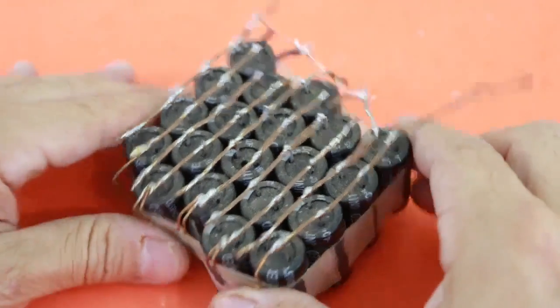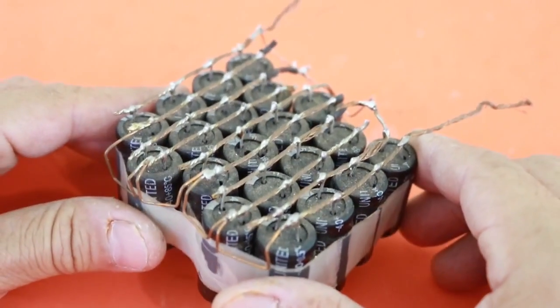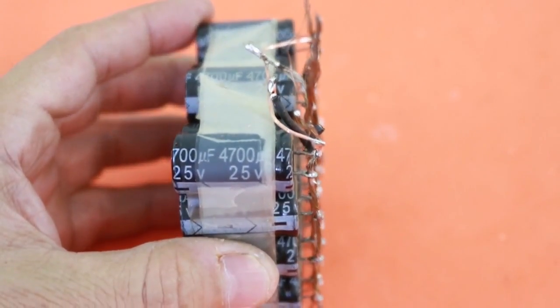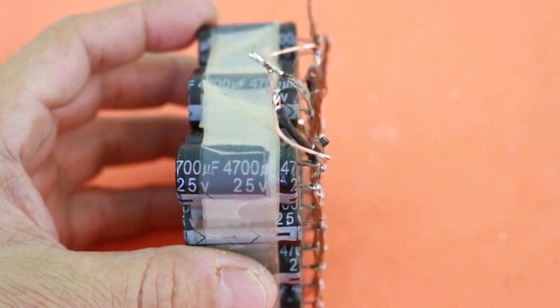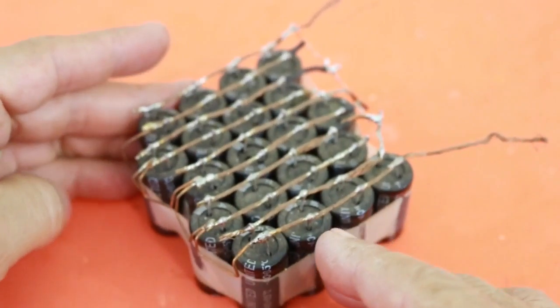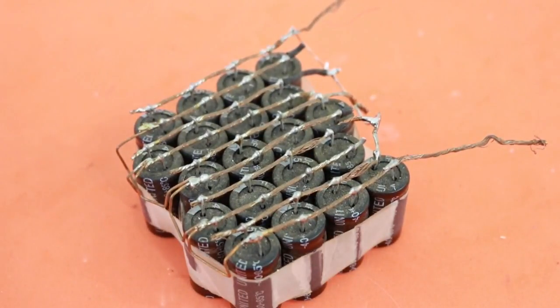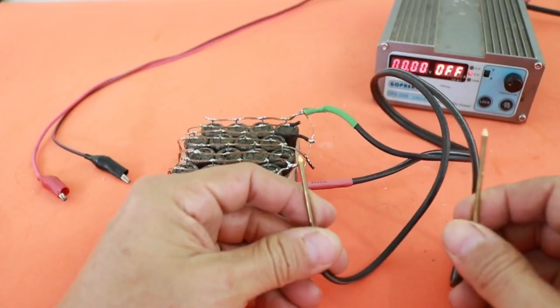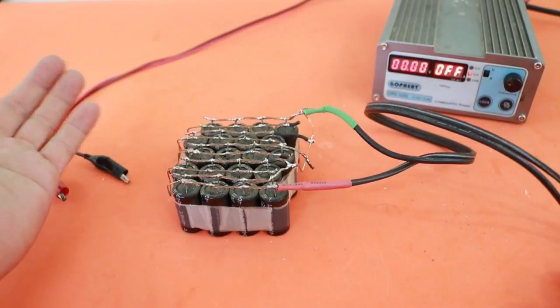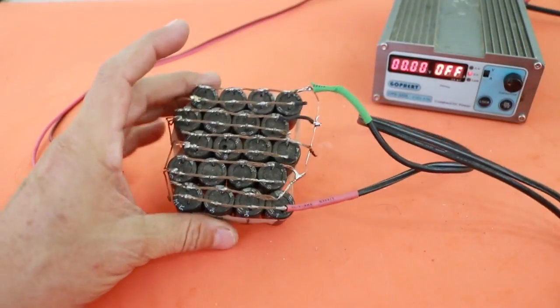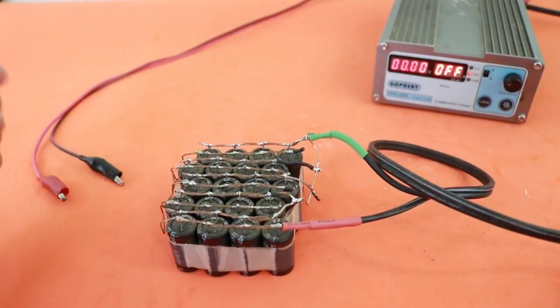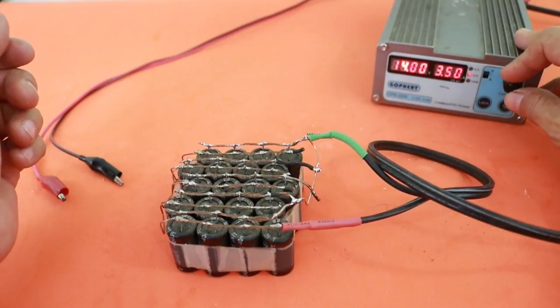I made this capacitor bank, 20 capacitors, all of them in parallel. Each capacitor is rated at 4700 microfarads at 25 volts. So the 20 capacitors in parallel will give a total capacitance of 94,000 microfarads. I added these two metal tips to the capacitor bank in order to use it for spot soldering. And I will charge it with the power supply. Since the capacitors are rated at 25 volts, that is the maximum voltage that we can apply to the bank. So let's use for example 20 volts.